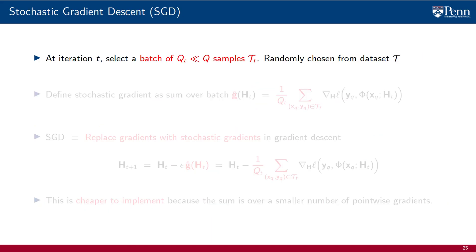To avoid this cost, we use stochastic gradient descent. At iteration t, we select a batch of q_t samples from the training set. This batch, which we will denote as T sub t, is drawn randomly from the data set and is such that the number of samples it contains is much smaller than the number of samples q in the training set.